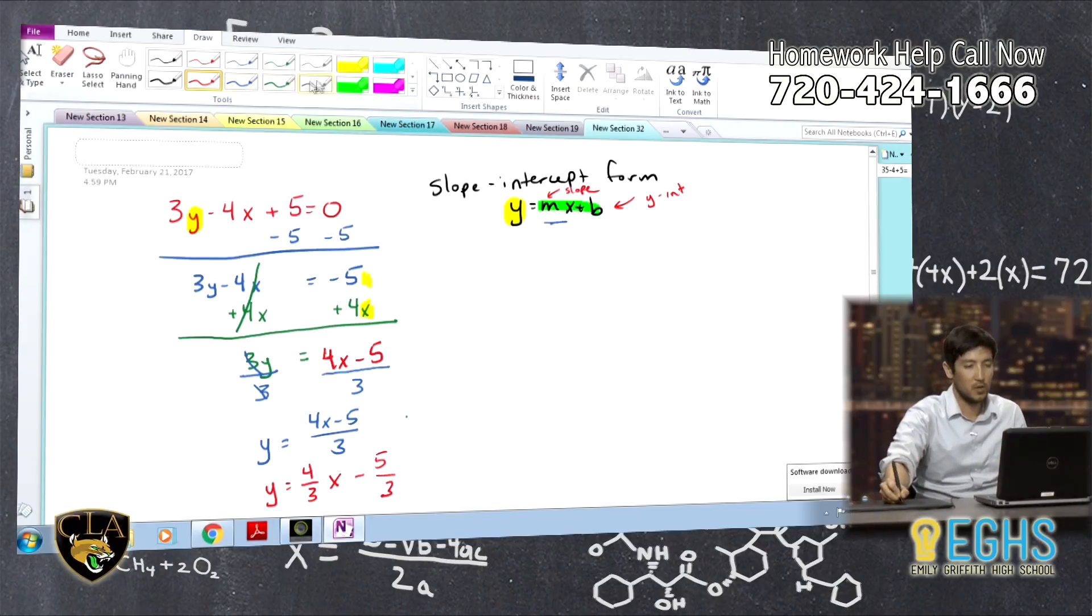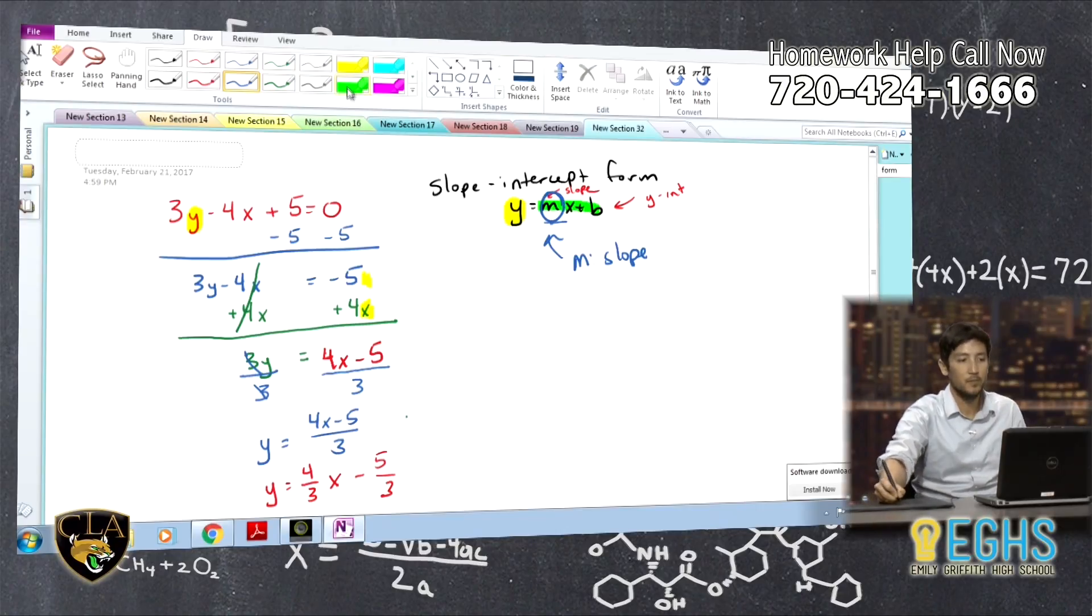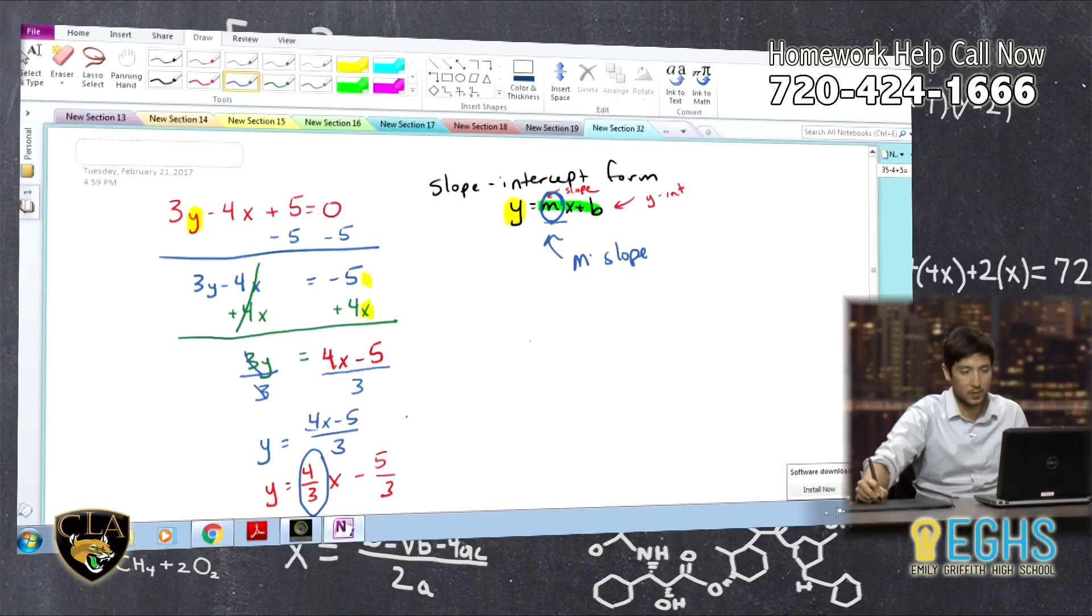And then we're looking for the slope. So, literally all you're doing is here we said that m is my slope. Well, think about what is in place of m here because there's no m left. Well, that is this 4 thirds. So, our slope is 4 over 3.